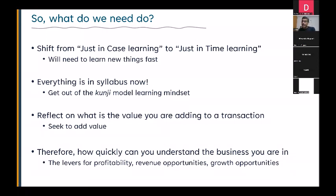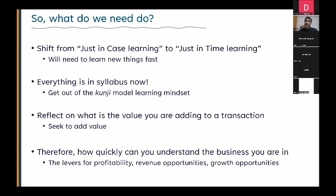The second point: we have to get out of the 'kunji' model. In India, 'kunji' means a key or guide — for any exam, there's a kunji and you can pass with that. For JEE, you go to a coaching institute, get question papers, and pass. The problem is we draw lines: 'this is in syllabus, this is out of syllabus.' Once you start working, everything is in syllabus — there is nothing out of syllabus.